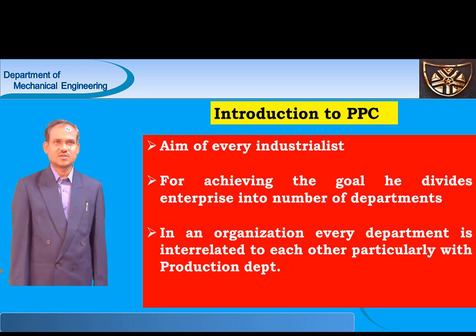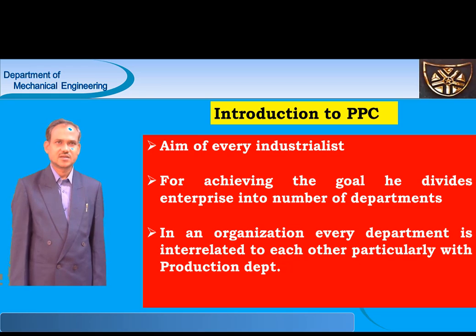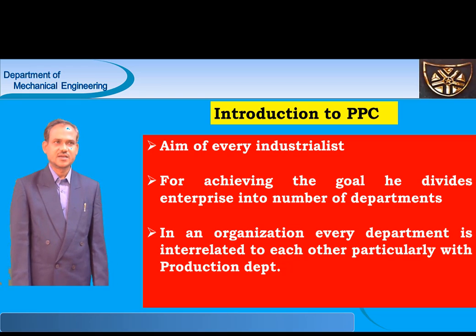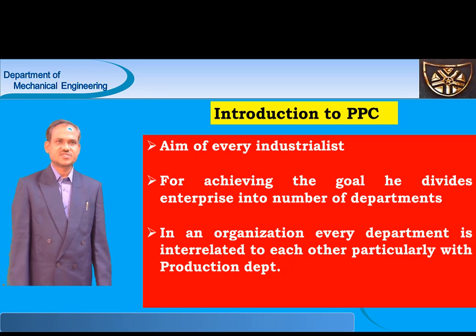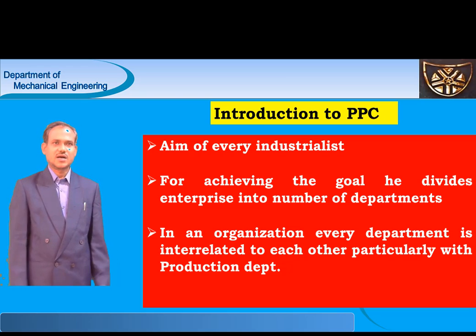For achieving this goal, he divides his enterprise into a number of departments — like Production, Planning, Control, Purchase, Quality Control, Inspection, Maintenance, Engineering Department, R&D, and so on. Among these departments, Production, Planning and Control departments are the most important to achieve the goals of the enterprise with the help of other departments.